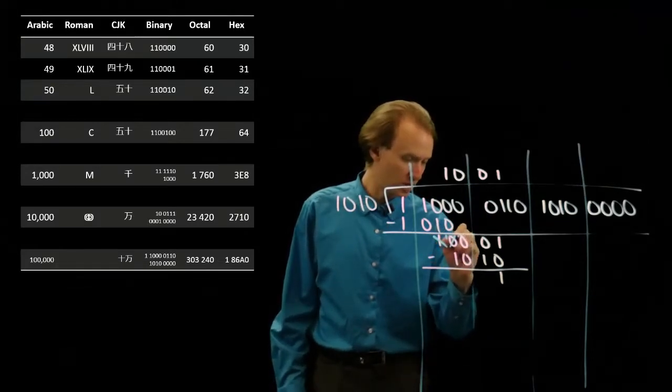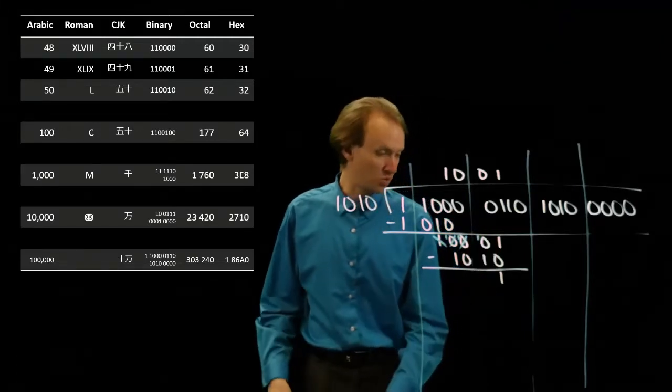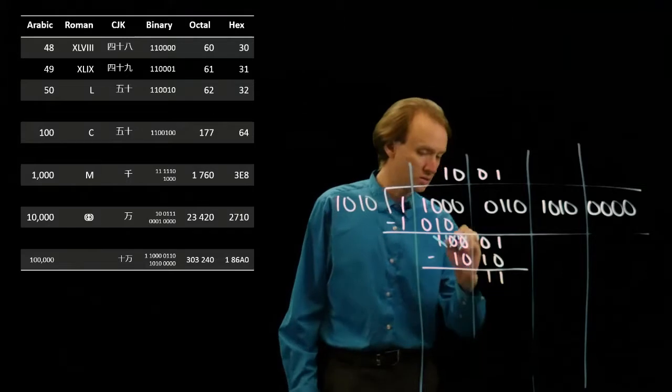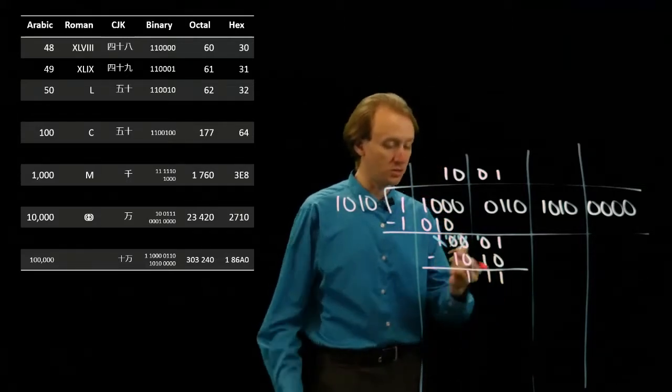The 10, I'll borrow from that. There's another 10 to borrow. Now I've got something I can work with. 10 minus 1 is 1. 1 minus 0 is 1. And 1 minus 1 is 0. And 0 minus 0 is 0.